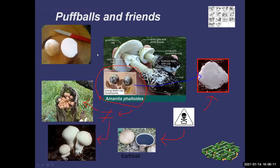The one thing about puffballs: if you're thinking of eating them, you cut them in half and they must be pure white in the middle. Even the giant puffball — if they've got green in the middle, they're past their prime, don't eat. With smaller ones, there's a small chance you might have picked a baby amanita. If it's not a puffball, you're going to see a little baby mushroom in there, and that would be poisonous — that would kill you.